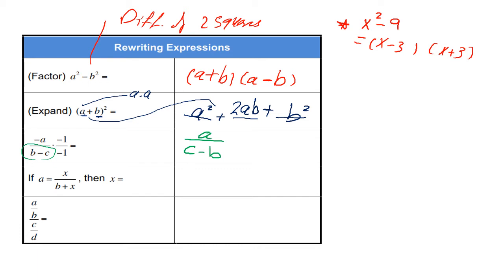Number four: If A is equal to X over B plus X, and you want to rewrite it in X, this one will take a lot of steps. Because first, you need to write A over B plus X and you cross multiply it.